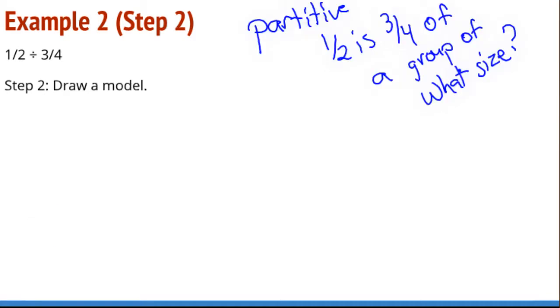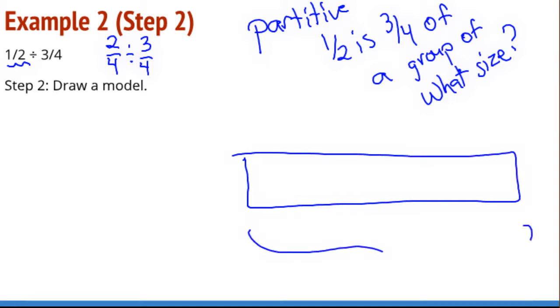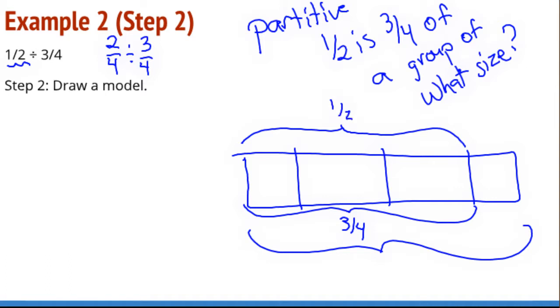Looking at a model here, half is three-fourths. Now one of the things that we've worked on or found useful is to have common denominators. So I'm going to take this half here, and I'm going to scale it up to be two-fourths divided by three-fourths. So as I work with my model, it should be a little bit easier. And it says half is three-fourths. So I need some fourths here. And so here is my three-fourths. And I know that half is equal to that three-fourths. So my half is three-fourths. And of course, I'm trying to find the complete group size here.